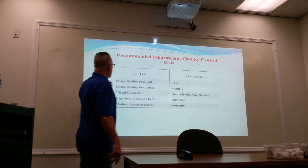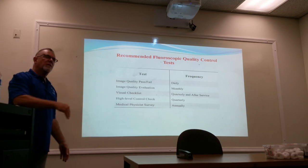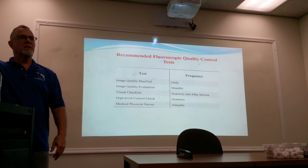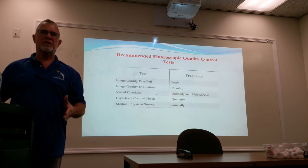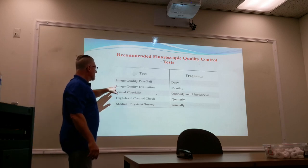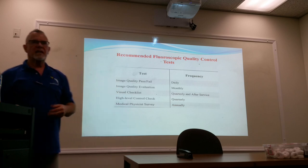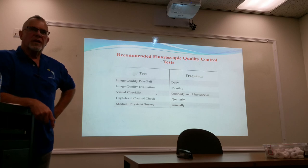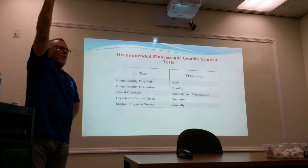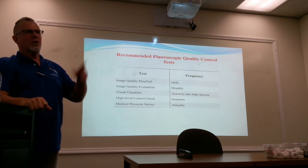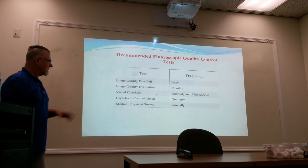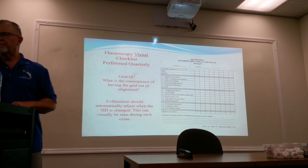For recommended QC tests and frequency — image quality pass or fail — in a digital room, the first image that should come up every day at the beginning of a shift is the SMPTE pattern. It should appear on the monitor, you should be able to see everything you need, and then go on. It takes less than 30 seconds and will save a lot of heartbreak. Monthly detailed testing, quarterly visual checklist, and after-service checks. I believe in visually checking your room every time you walk in — look for things like frayed cords; a cable drape starting to tear is something you report.